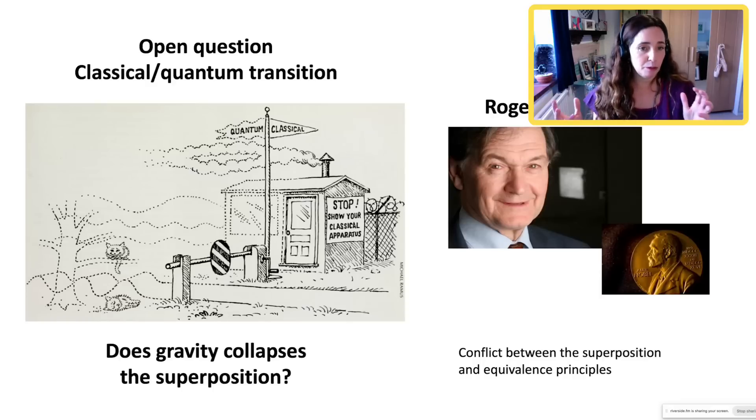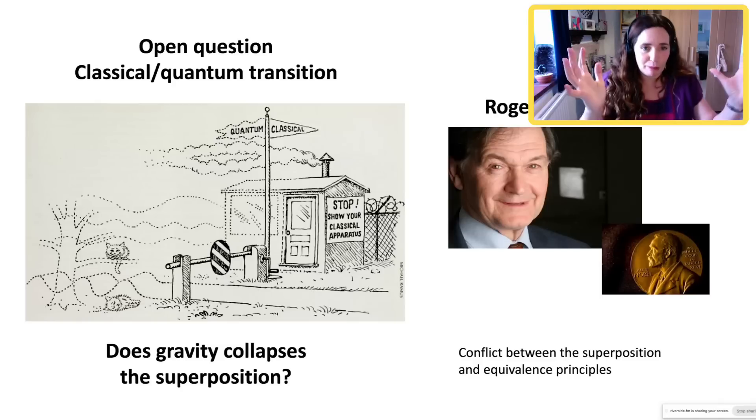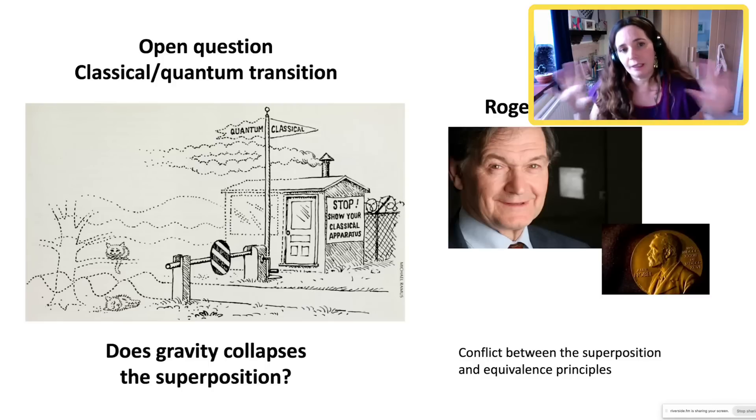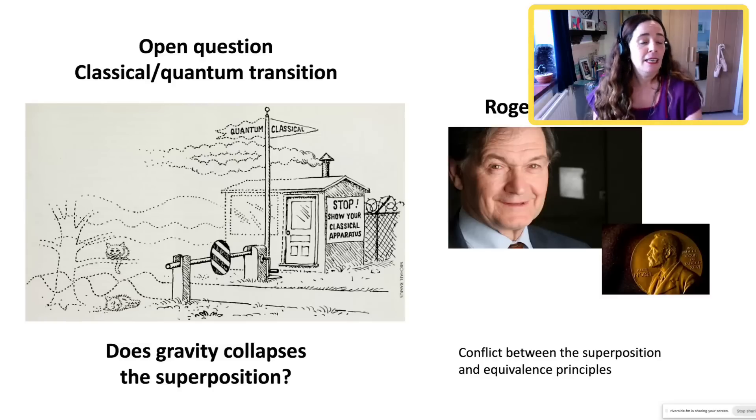So he said yes, you could have a superposition of a massive system that, for him, this would already be quantum gravity because you have a gravitational field in a superposition of two different configurations. But these are unstable and they decay very quickly. And that is why we don't see superposition in the classical world.